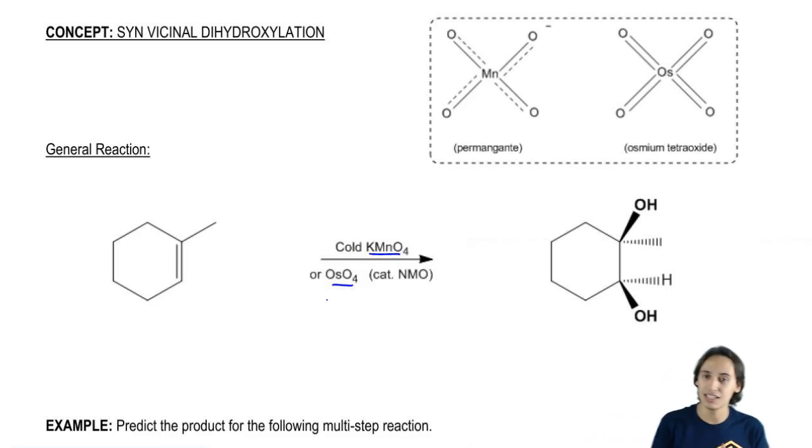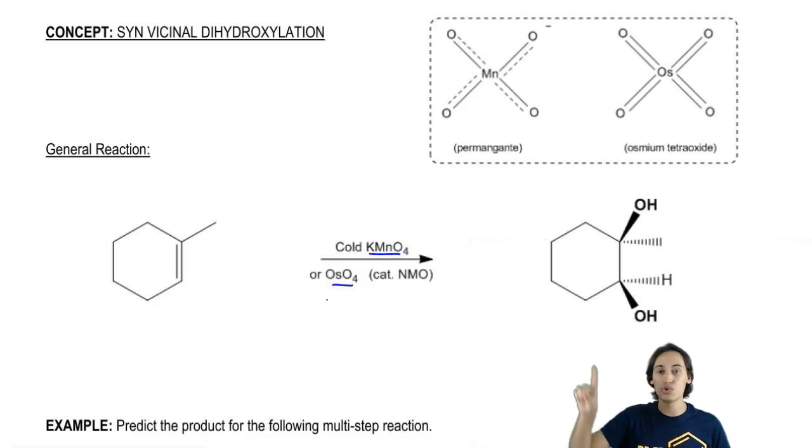As you can see, it's really easy. All we have is a double bond. We add one of these two reagents. It doesn't matter which one. Sometimes you're going to see catalytic NMO. That's just a catalyst that sometimes comes up, sometimes it doesn't. Don't worry too much about it.